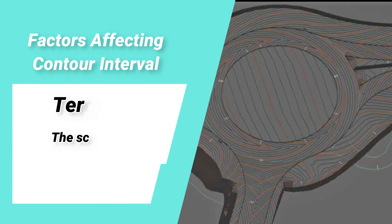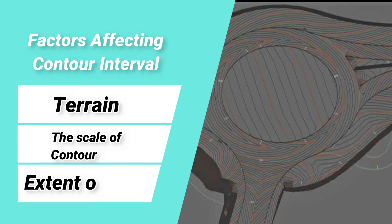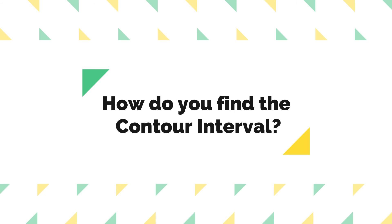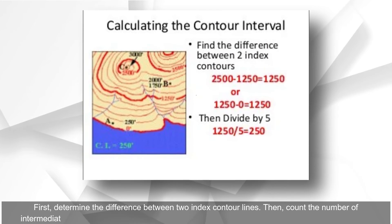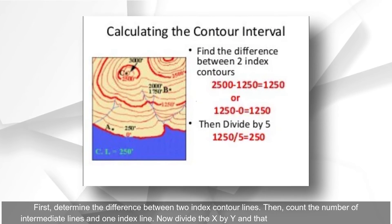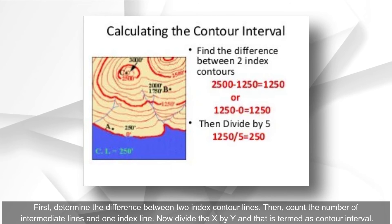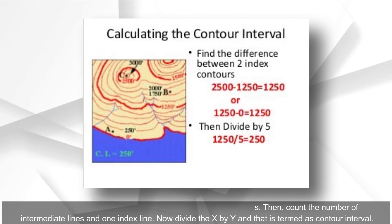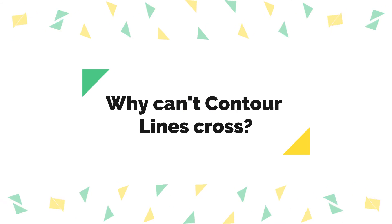The key factors affecting contour interval are: terrain, the scale of the contour map, and the extent of the map. To find the contour interval, first determine the difference between two index contour lines, then count the number of intermediate lines plus one index line, then divide the difference by that count — the result is the contour interval.